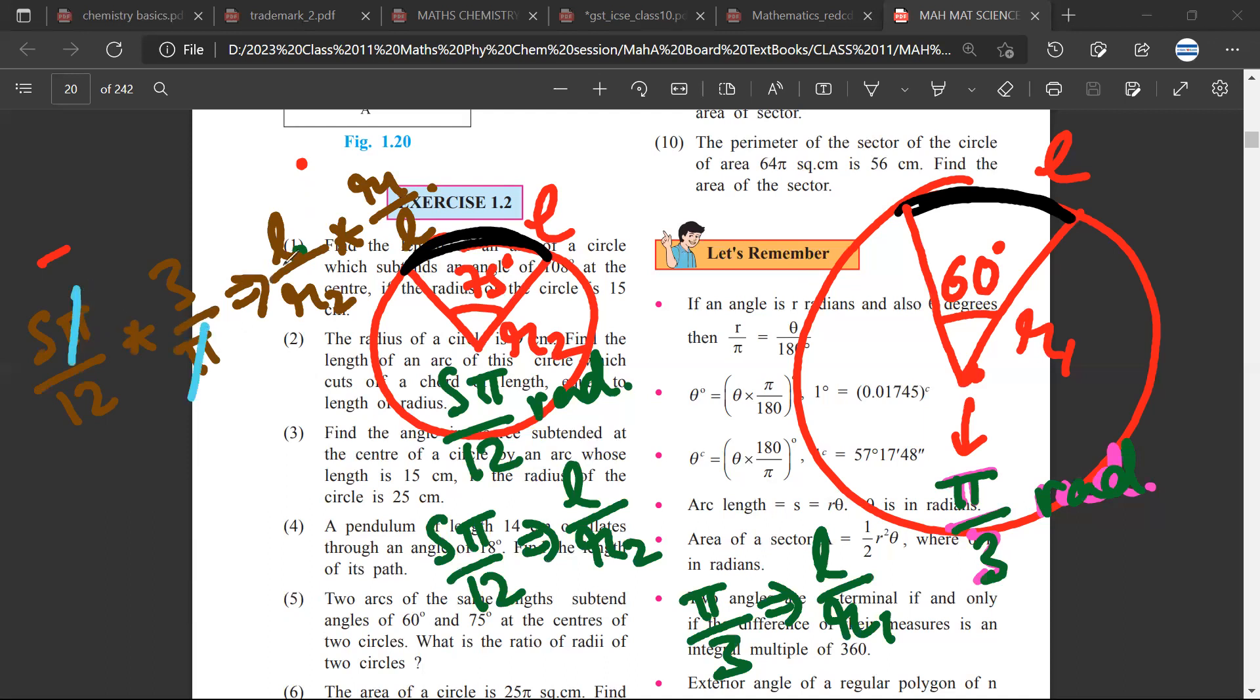The π and π will cancel, the l and l will cancel. So 5/4 is equal to r1 by r2. So this is the ratio that you will get. Any doubt?